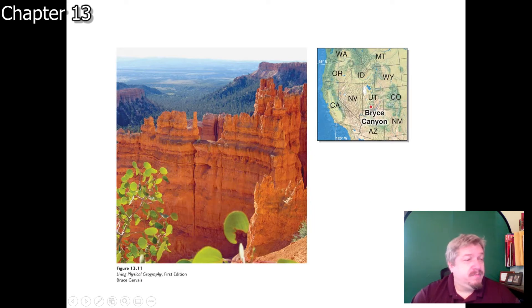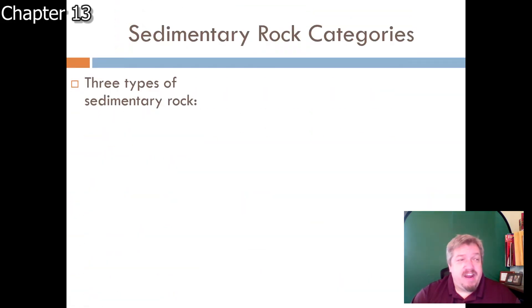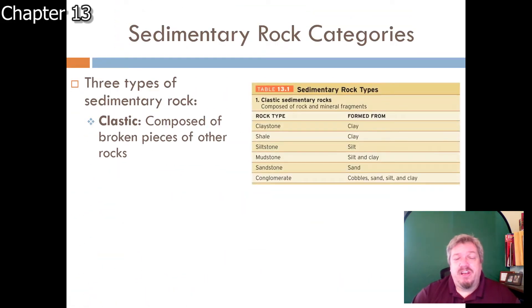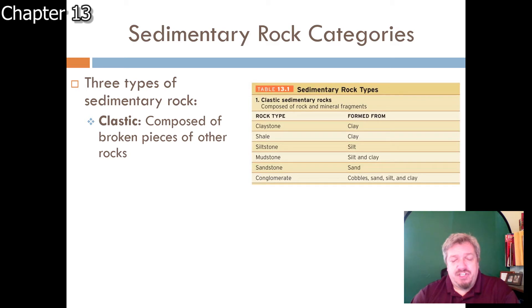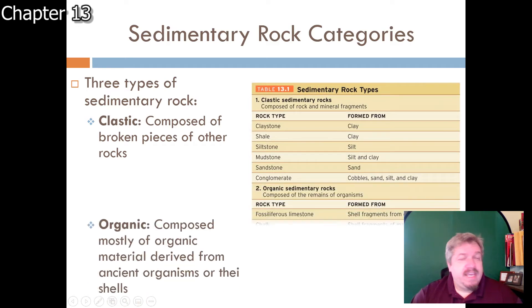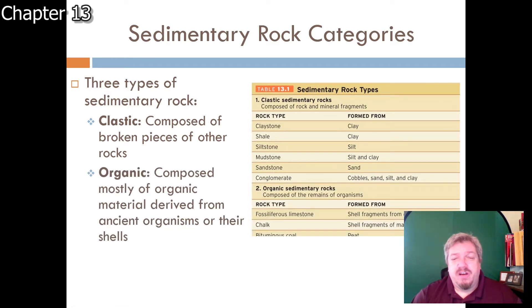Sedimentary rocks come in layers and fall into three categories based on their construction. Clastic sedimentary rocks are basically pieces of other rocks that broke down - sandstone is formed from sand, and sand is just tiny broken pieces of other rocks. If you looked at a handful of sand from a Chicago beach under a microscope, you'd see really tiny pieces of quartz, which gives it that tan color. Quartz usually comes from granite.